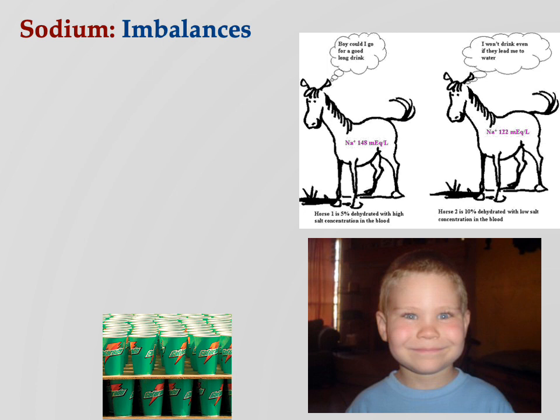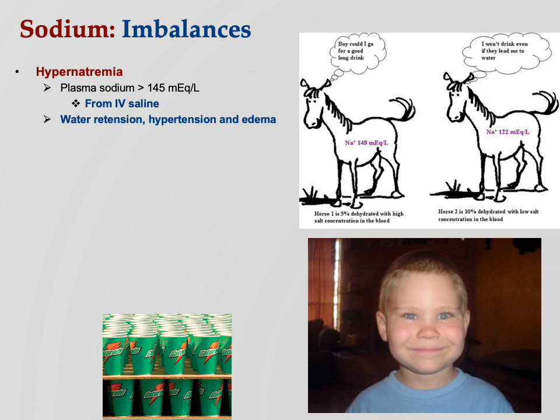Sodium imbalances are a big deal and can cause serious consequences. Hypernatremia — plasma sodium over 145 milliequivalents per liter. How can this happen? IV saline: nurses set the drip, set it wrong, don't get back to the room for an hour, and the patient's arm is swollen to three times its size. Because sodium in the ECF is going to pull water, you end up with too much water in the ECF — water retention, hypertension, and edema. This happens more often than you might think.